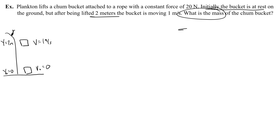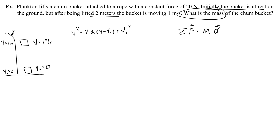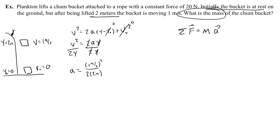The mass appears in the net force equation: sigma F equals mass times acceleration. If I can find the acceleration, I can use it to find the mass. Since I don't have time, I'll use the 'ain't got no time' equation with y instead of x. Eliminating zeros — initial height is 0 and initial velocity is 0 — this becomes v² equals 2ay. Solving for acceleration: a equals v² divided by 2y, which is (1 m/s)² divided by 2 times 2 meters, giving 1 over 4, or 0.25 meters per second squared.